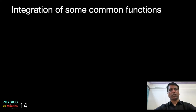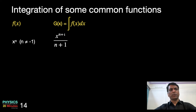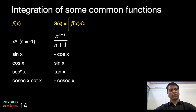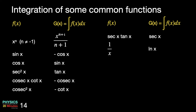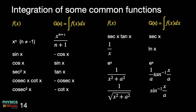Let us have the formulae for integration of some common functions. If f(x) = xⁿ, then its integral is xⁿ⁺¹ / (n+1). This excludes the case n = −1, which we will see next. Integration of sin x is −cos x. Integration of cos x is sin x. Integration of sec²x is tan x. Integration of cosec²x is −cot x. Integration of sec x tan x is sec x. For n = −1, the integration of 1/x is the natural log of x, ln(x). Integration of eˣ remains eˣ. Integration of 1/(x² + a²) is (1/a) tan⁻¹(x/a). Integration of 1/√(a² − x²) is sin⁻¹(x/a).